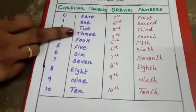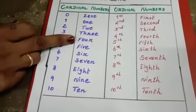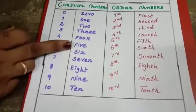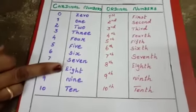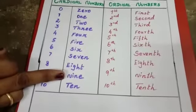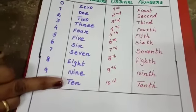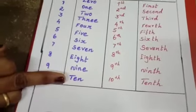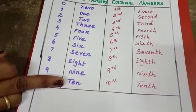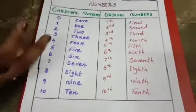2, 3, 4, 5, 6, 7, 8, 9, 10. A cardinal number answers the question: how many.